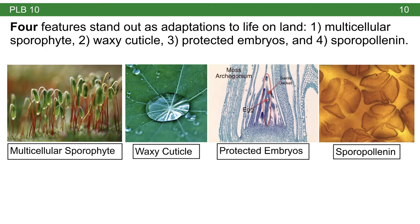A waxy cuticle is something produced by the epidermal layer of plants in order to prevent desiccation. Algae live in water, so drying out isn't really a problem for them. But land plants have to go through some process to prevent themselves from drying out. One thing they do is secrete waxes to prevent drying out. Another thing, as we've learned, is the opening and closing of stomata to regulate photosynthesis. All land plants tend to secrete waxes that help prevent desiccation.